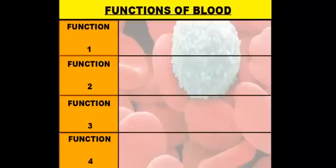Hi there, boys and girls. Welcome to today's vodcast on blood and blood types. In our previous vodcast, you learned about the different parts of blood, which we'll quickly review in a moment. We also learned about the heart and the vessels in the cardiovascular system. Blood is the third major part of the cardiovascular system, and the blood has four functions.